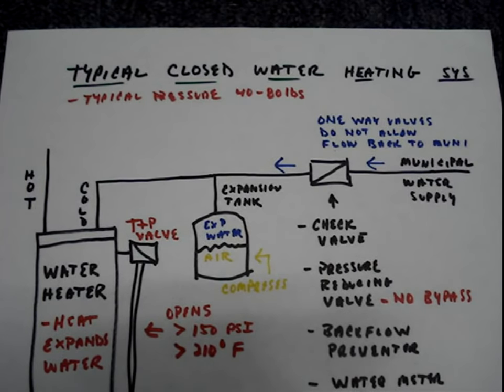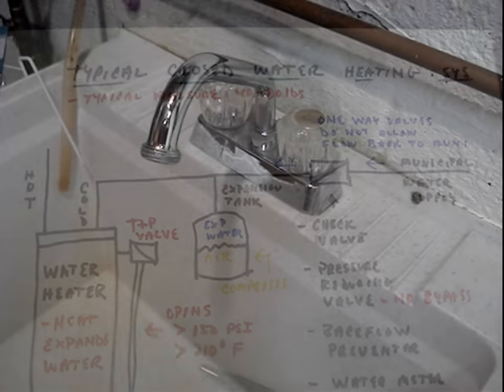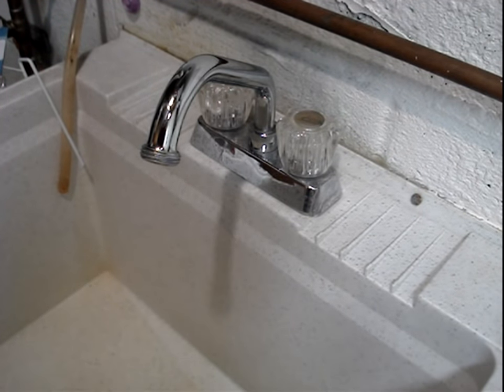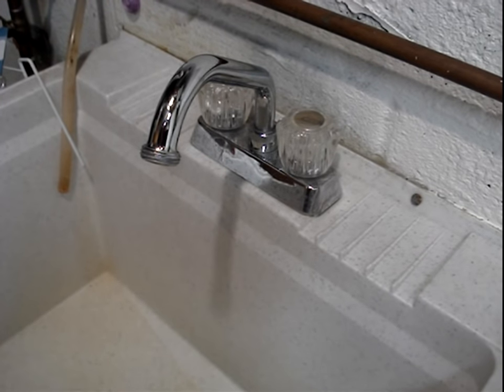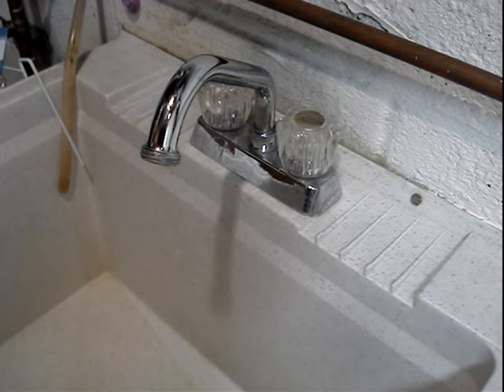212 degrees Fahrenheit at sea level is the boiling point for water. Boiling water coming out of faucets would likely be something that you'd notice. If a thermostat failed and a heater does not stop heating water, then the temperature and pressure valve, if properly working, should open at 210 degrees and stay open until the temperature falls below 210 degrees.